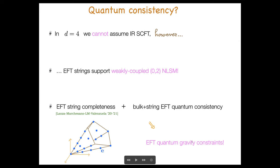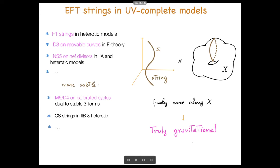Before entering some more details, let me briefly comment on the UV completion of such EFT strings. There is a list I'm not going to discuss now, but I will come back to some examples. I just wanted to emphasize a common feature of these EFT strings, at least in cases where we have better control over the UV completion: they typically correspond to higher-dimensional branes which can freely move in the internal space and can explore the entire internal space. In this sense, they are truly gravitational objects which can in principle capture information on the entire UV completion.